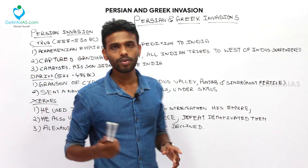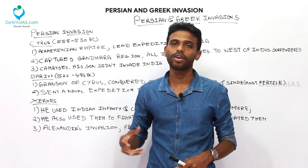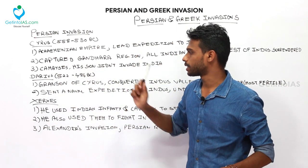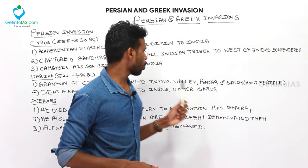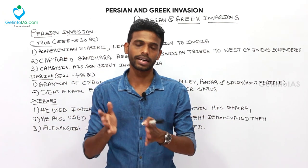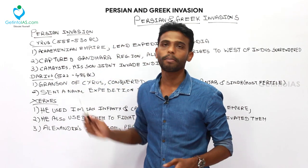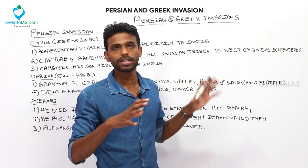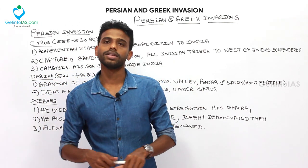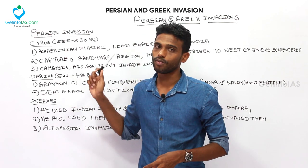Cyrus's son was Cambyses. He only ruled his Persian Empire and didn't invade any parts of India. But his son Darius — the grandson of Cyrus — ruled from 522 to 486 BC. He conquered the Indus Valley, meaning Punjab and Sindh. These were fertile territories producing barley and wheat, and became the most fertile province of the Persian Empire under Darius. He also sent a naval expedition to explore the Indus under the command of Skylax.